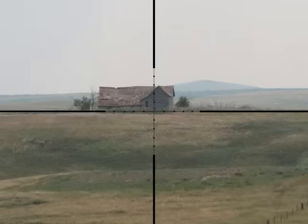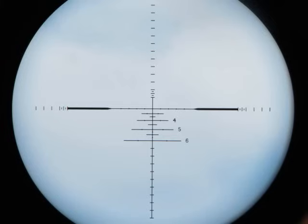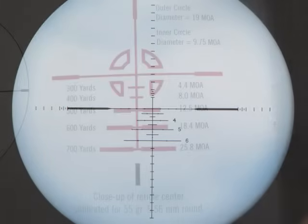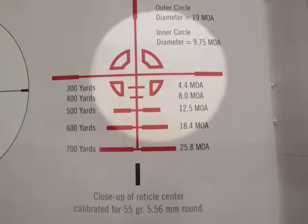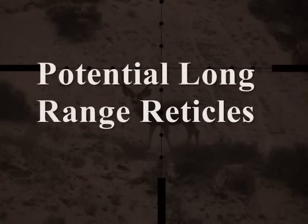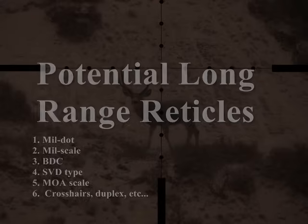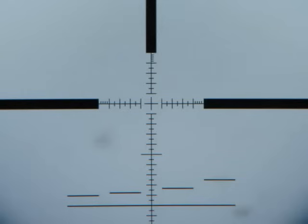We're going to look at mil dot reticles, mil scale reticles. We talked about the inappropriateness of BDC — ballistic drop compensating — reticles for our purposes. The SVD type reticles can almost be categorized with those BDCs. Then we have minute of angle scale reticles, which is just the equivalent of the mil dot or the mil scale, just in minutes of angle. And then you have your normal crosshairs, duplex, and speed dots, which are not going to be appropriate for our purposes. We're going to absolutely need angular systems of measurement marked off in our scope reticle so that we can apply different hold-off, because there's more than just wind going on at extreme ranges.